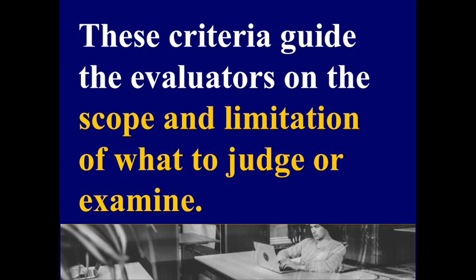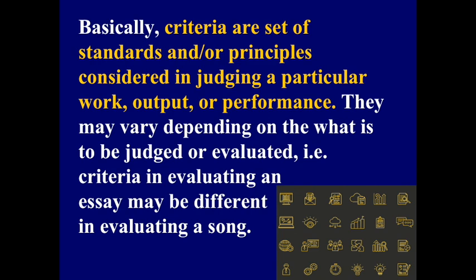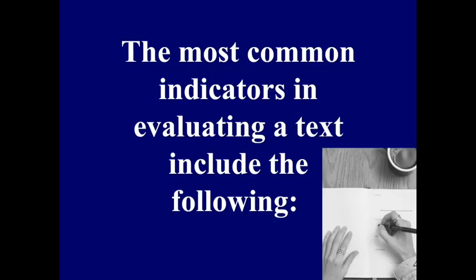These criteria guide evaluators on the scope and limitation of what to judge or examine. Basically, criteria are a set of standards and/or principles considered in judging a particular work, output, or performance. They may vary depending on what is to be judged or evaluated. For example, criteria in evaluating an essay may be different from criteria in evaluating a song. The most common indicators in evaluating a text include the following.